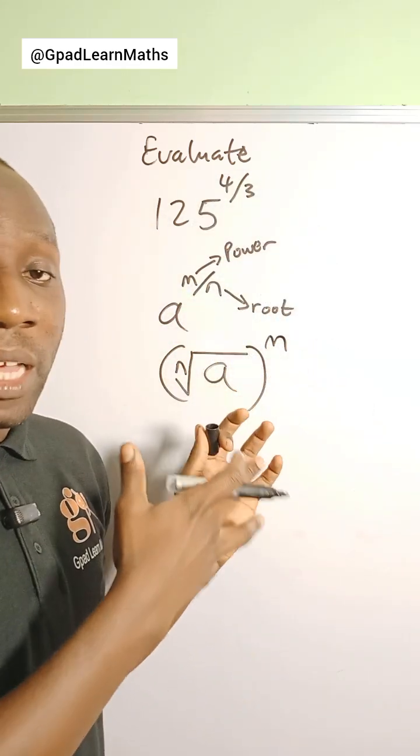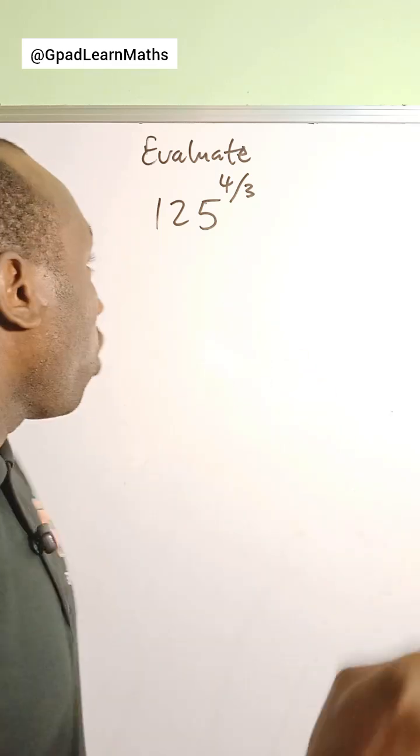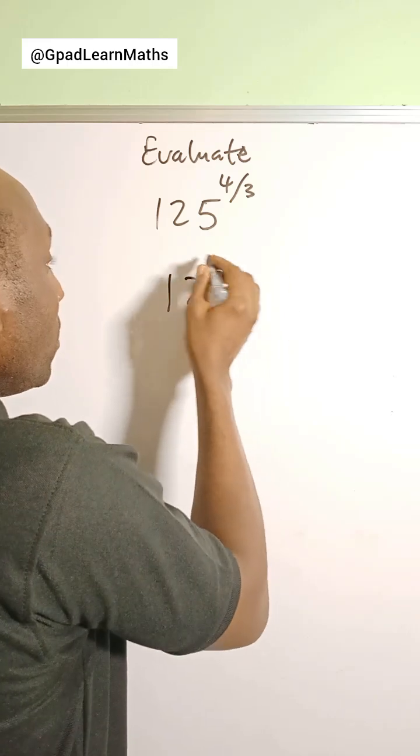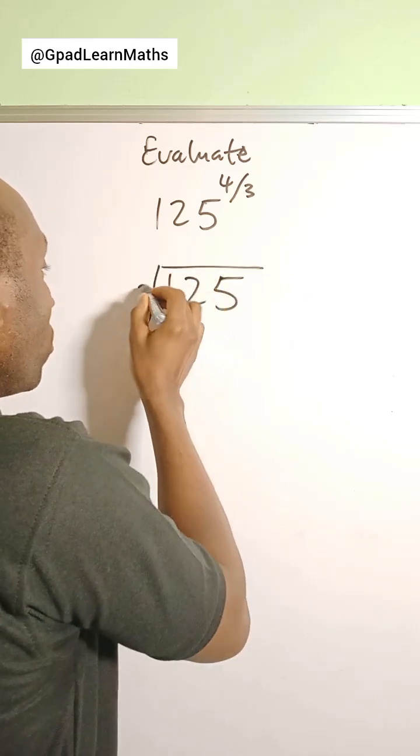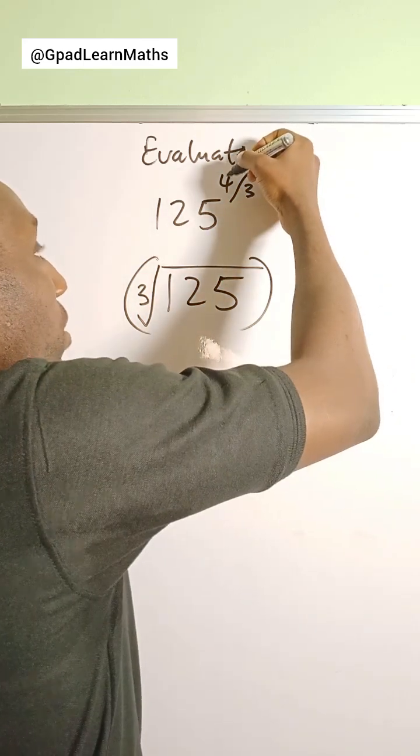So applying that law on this, you are going to have the cube root of 125, all raised to the power of four, because this is the power there, this is the numerator.